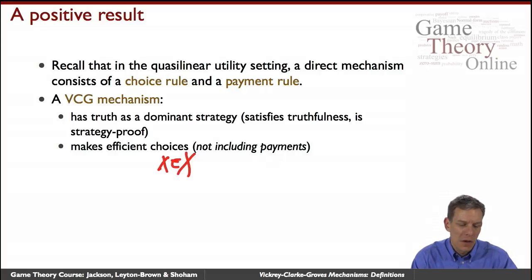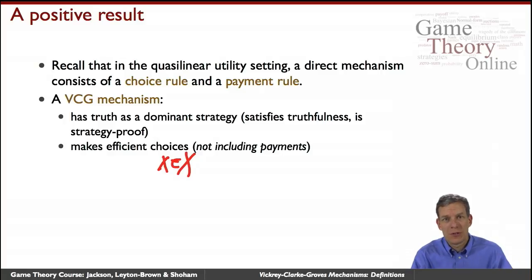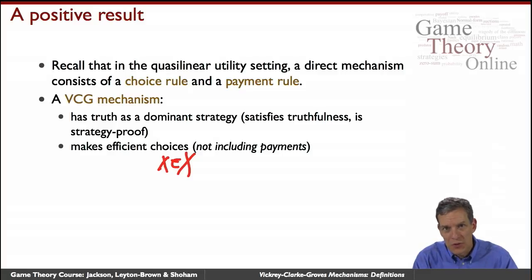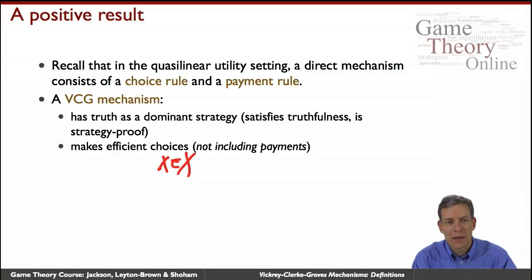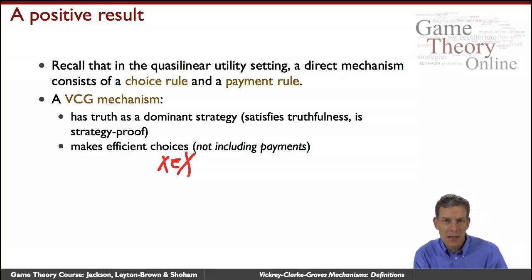In terms of history, Vickrey was the first to define these in an auction setting. This has a close relationship to second price auctions, and basically generalizes second price auctions to a more general class known as Vickrey auctions. Clark then generalized that to a more general class of settings and defined what was known as the pivotal mechanism, which is a special class of these. Groves then gave the full class of all such mechanisms. The nice thing is we're going to have dominant strategies and efficient choices.